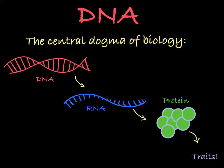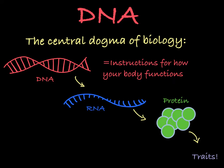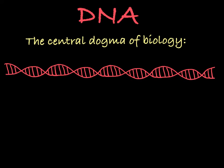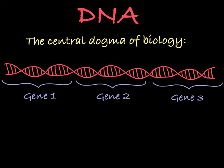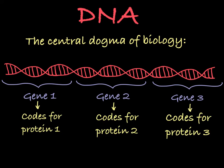What your DNA says is the baseline instructions for how your body functions. Your DNA contains segments called genes. Each gene contains a DNA code for a specific protein, or a piece of a protein. You have tens of thousands of genes in your DNA, each coding for a protein with an important function in your body.